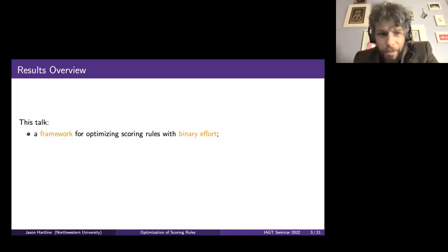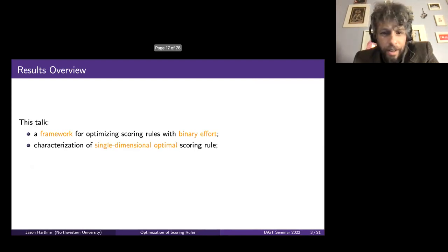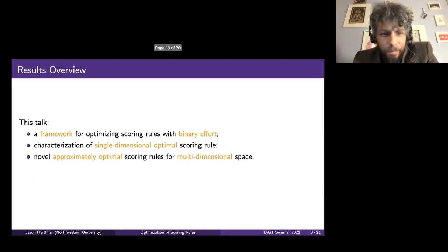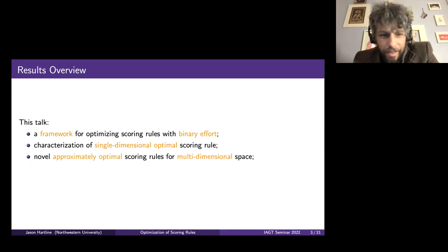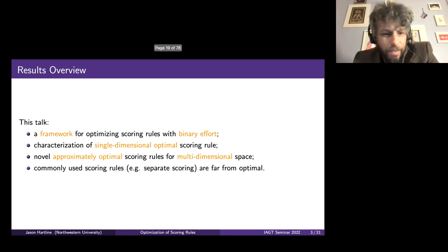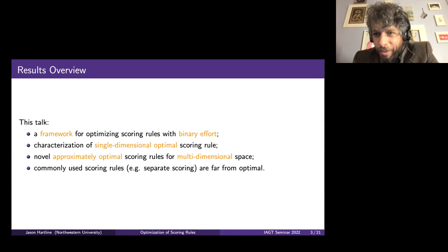I'm going to talk about a framework for optimizing scoring rules with binary effort. We'll take a brief detour through single-dimensional scoring rules, but our main interest is on multidimensional scoring rules. We'll also talk about how some standard scoring rules in the literature that everyone uses are suboptimal for this objective — in fact, far from optimal.